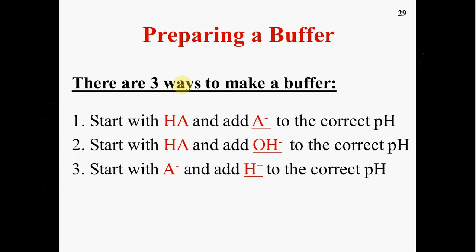There are several ways to make a buffer. First, you can start with a weak acid and simply add its conjugate base, like acetic acid and sodium acetate, or a weak base and its conjugate acid, as we've been using in our previous examples.